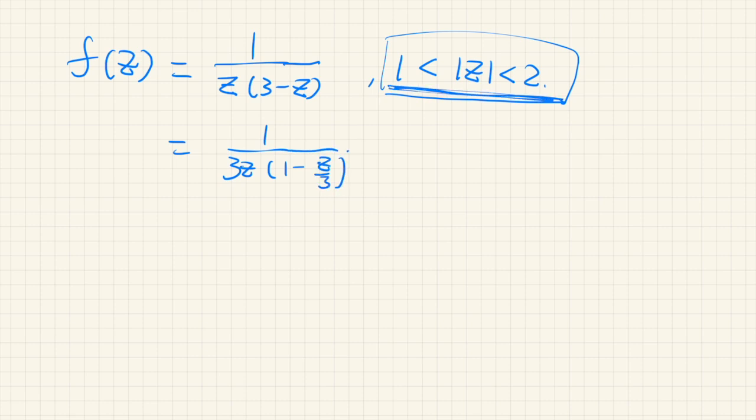Okay, since because of this limit, z over 3, the absolute value of z over 3 is less than 1, and so we can expand this part as 1 plus z over 3 plus z over 3 squared and so on by using the sum of the geometric series.